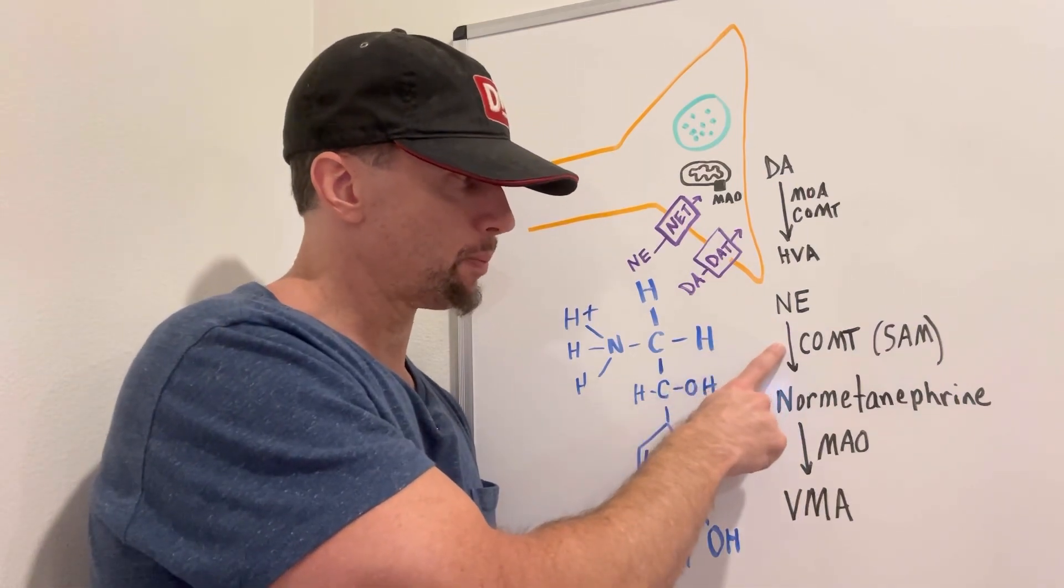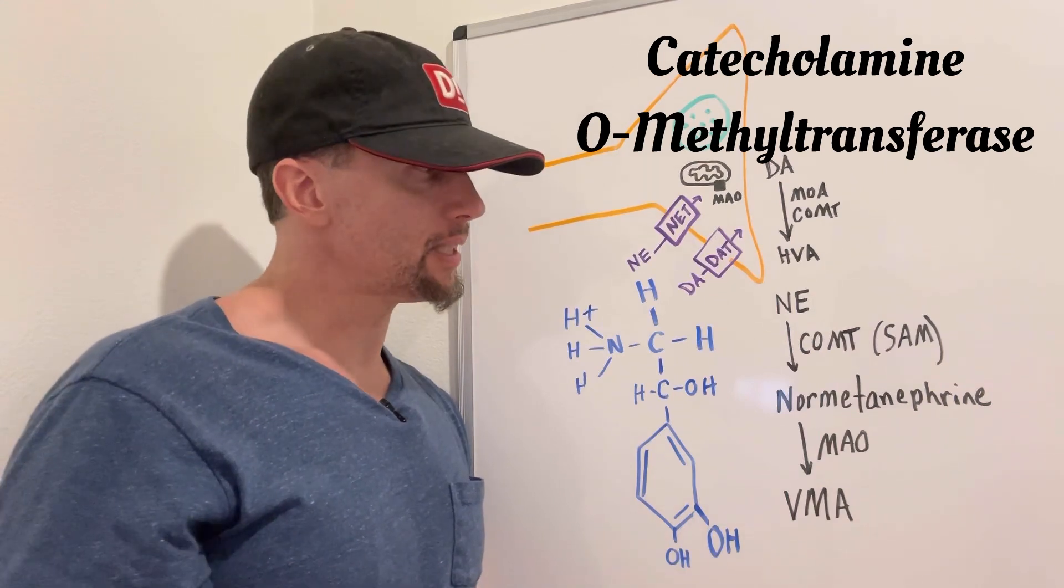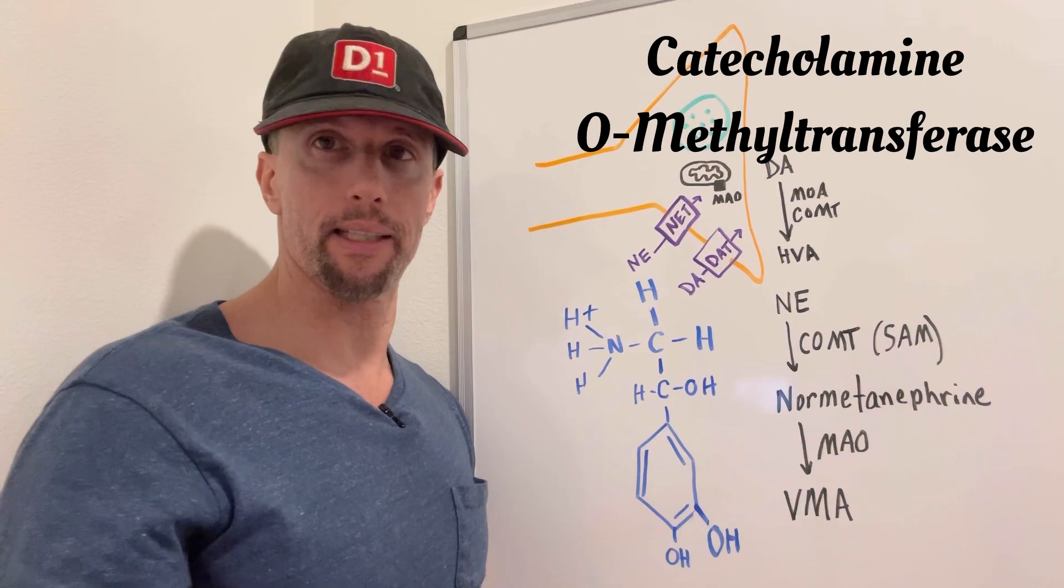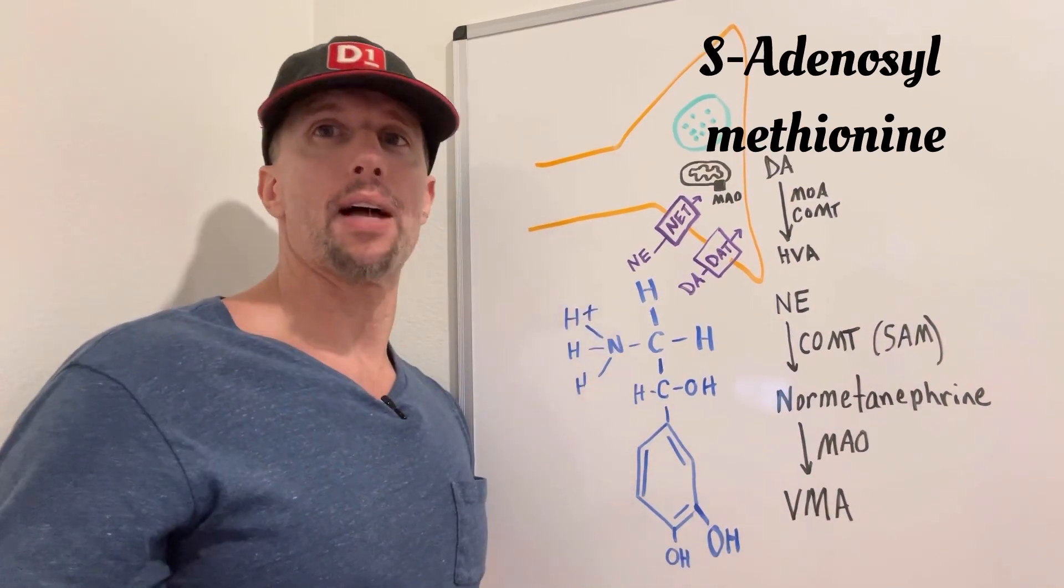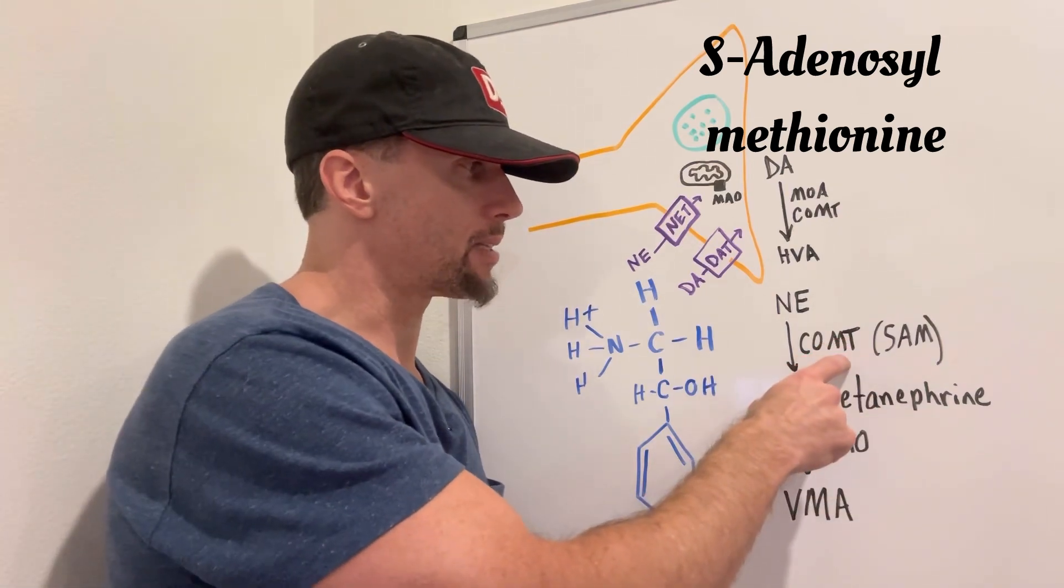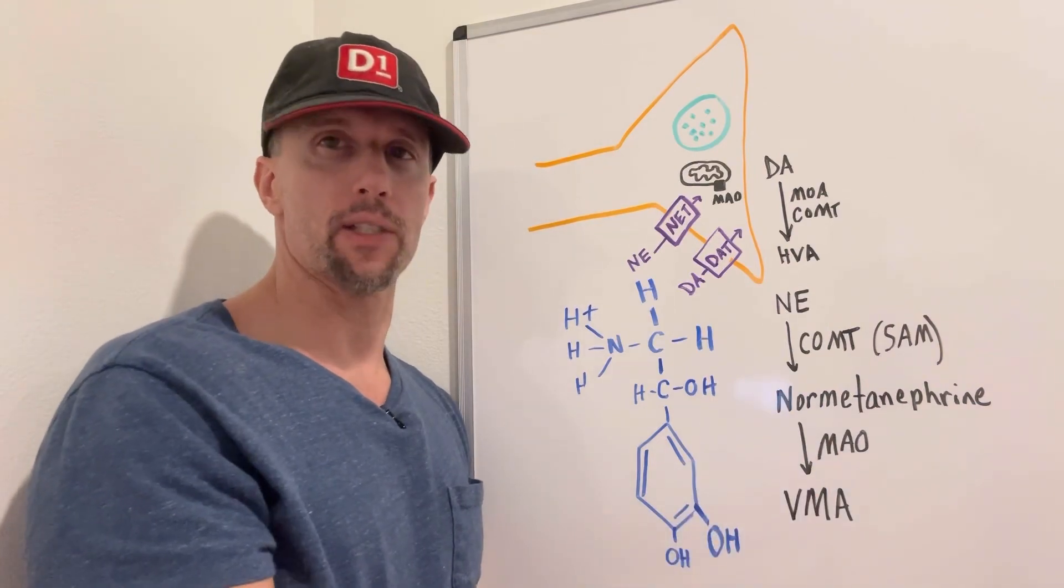So that enzyme would be COMT, or catecholamine-O-methyltransferase, and the methyl group is provided by S-adenosyl methionine, and I made a video about the homocysteine and methionine cycle, and I'll link to it, but basically once that gets methylated, it becomes normetanephrine, which is an intermediate.